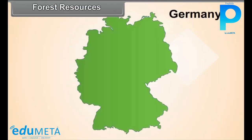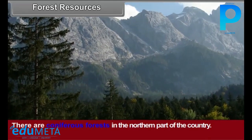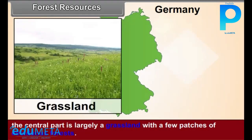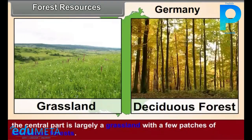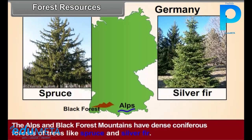Forest Resources. There are coniferous forests in the northern part of the country. The central part is largely a grassland with a few patches of deciduous forests. The Alps and Black Forest Mountains have dense coniferous forests of trees like spruce and silver fir.